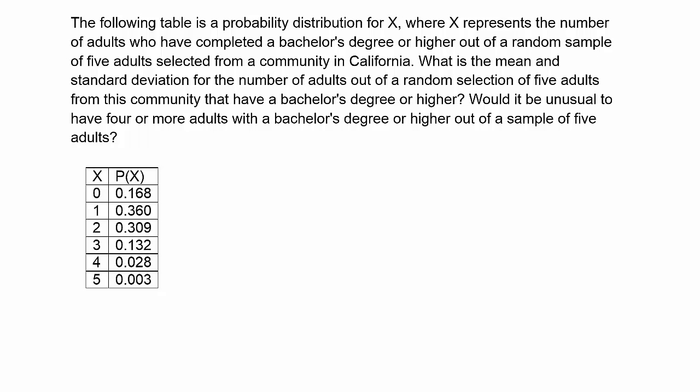The following table is a probability distribution for x, where x represents the number of adults who have completed a bachelor's degree or higher out of a random sample of five adults selected from a community in California. What is the mean and standard deviation for the number of adults out of a random selection of five adults from this community that have a bachelor's degree or higher? Would it be unusual to have four or more adults with a bachelor's degree or higher out of a sample of five adults?